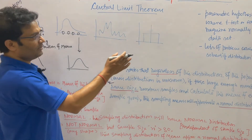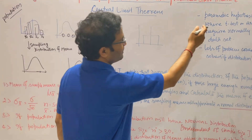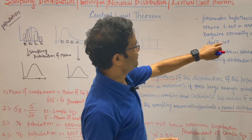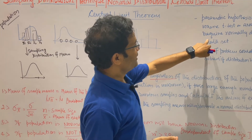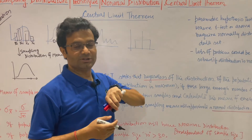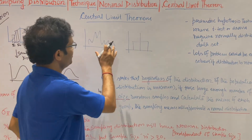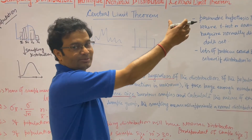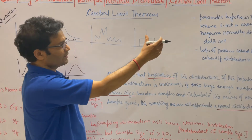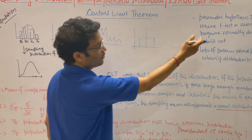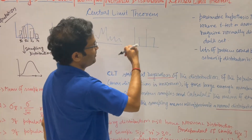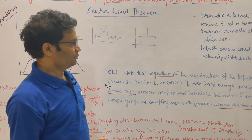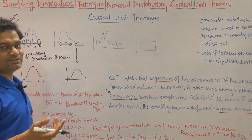This theorem is applied in parametric hypothesis testing, where we have the t-test, ANOVA — and they require normally distributed data. So if your population is not normally distributed and you have to perform this kind of testing, you can apply this theorem to get normally distributed data. If your data is normally distributed, you can solve many complex problems very easily.